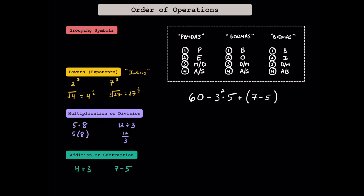And finally, we have grouping symbols. Some common grouping symbols you'll see are parentheses, brackets, and braces. Another common grouping symbol you'll see is a fraction bar. Whenever you see a fraction bar, whatever's on top is always grouped together, and whatever's on the bottom is also grouped together. While we don't see the parentheses around the top and the bottom, it's implied if you see a fraction bar between them.